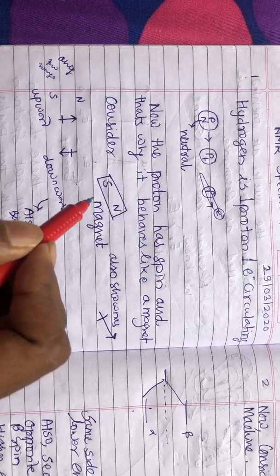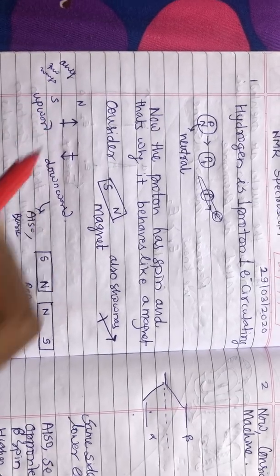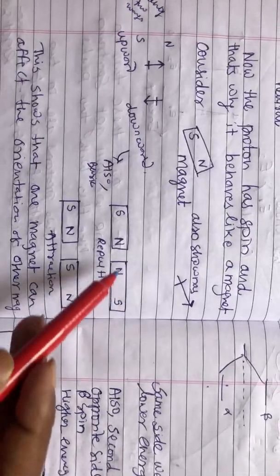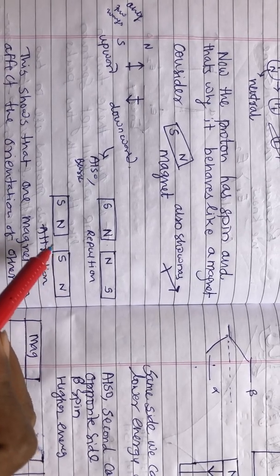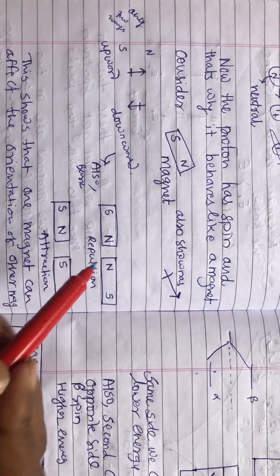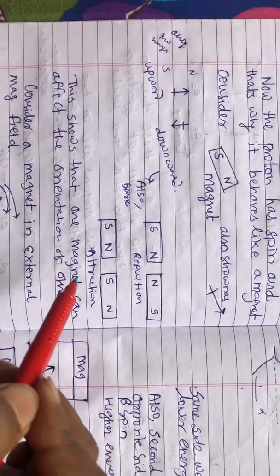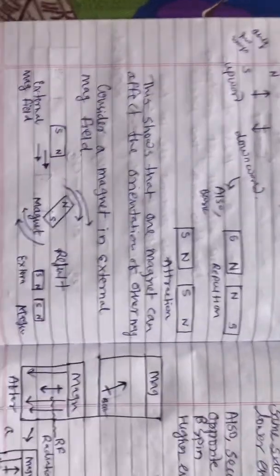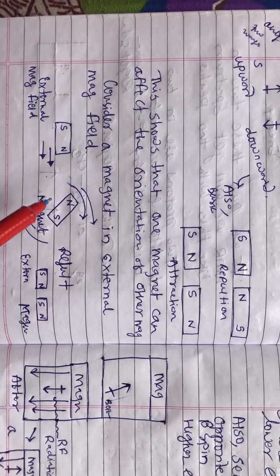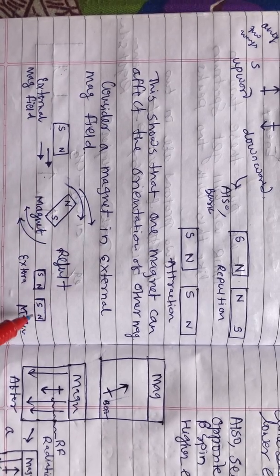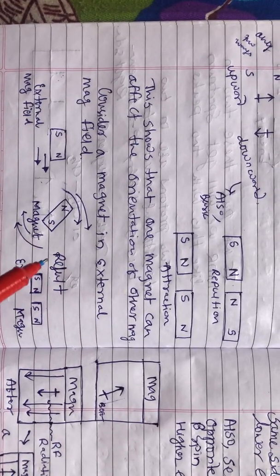Only two states are possible, upward and downward, north pole and south pole. If two same poles come closer, there is repulsion, and when opposite poles come, there is attraction. This shows that one magnet can affect the orientation of other magnet. This is the basic principle used in H1 NMR. When another magnet comes in contact, there is a spin or its orientation changes. This is the basic of NMR, explained by using the magnet.